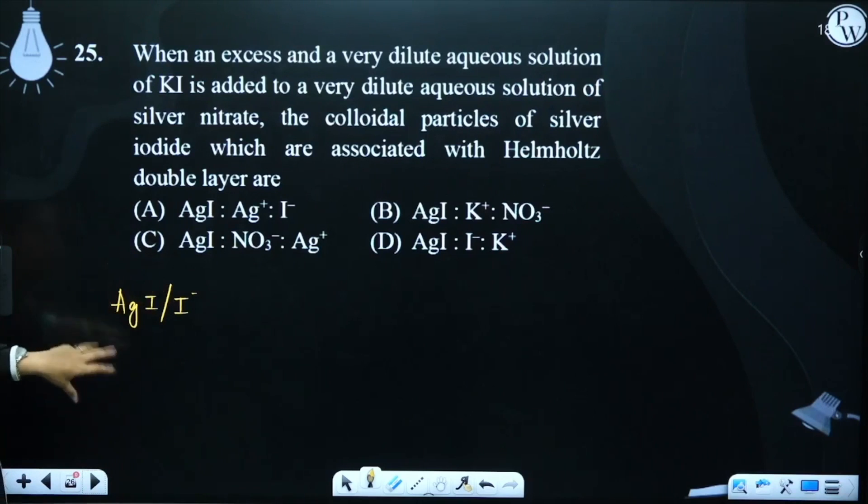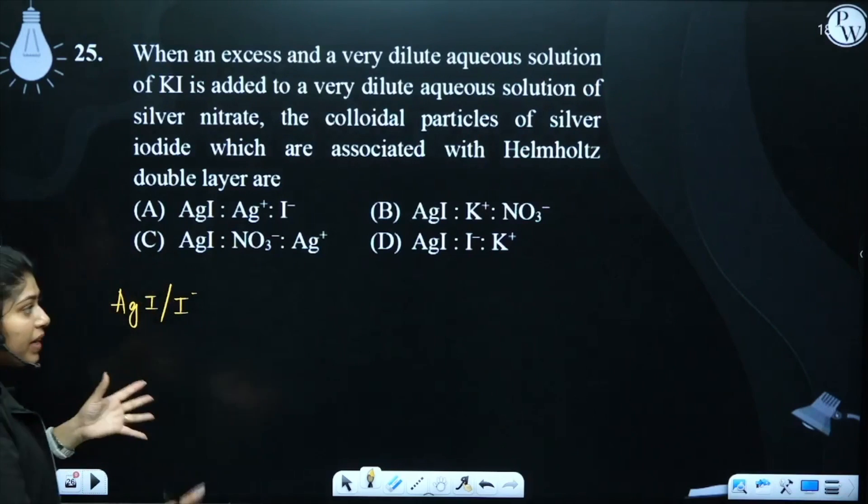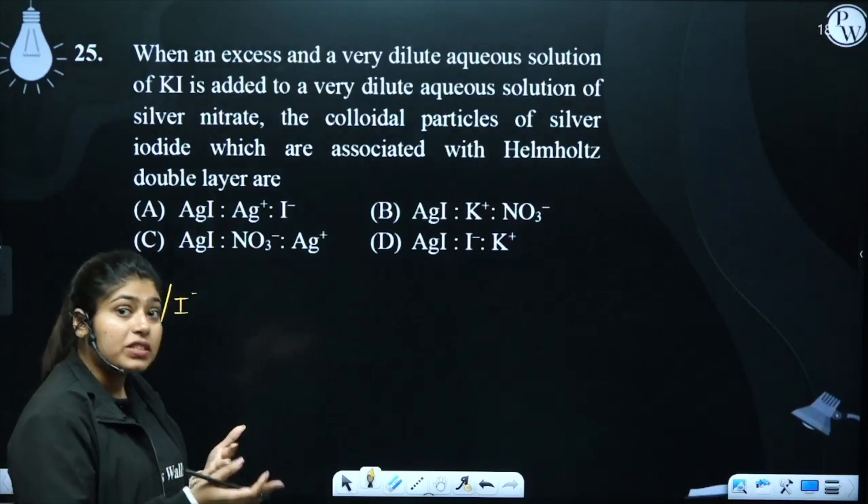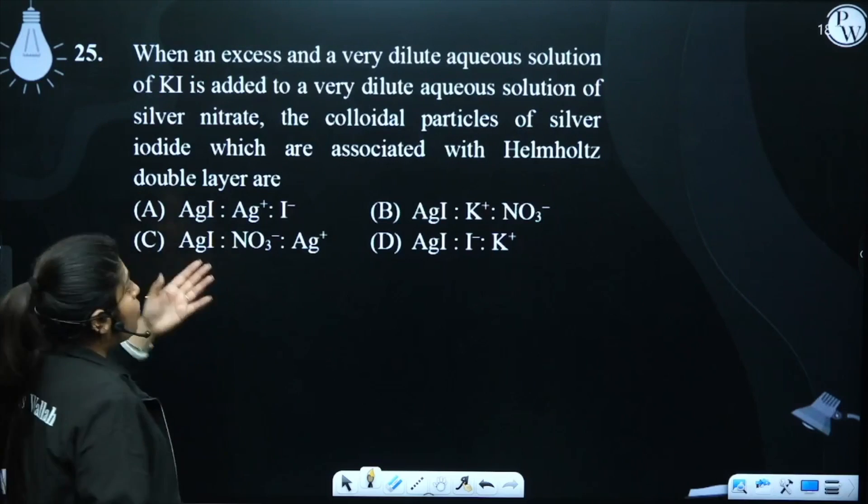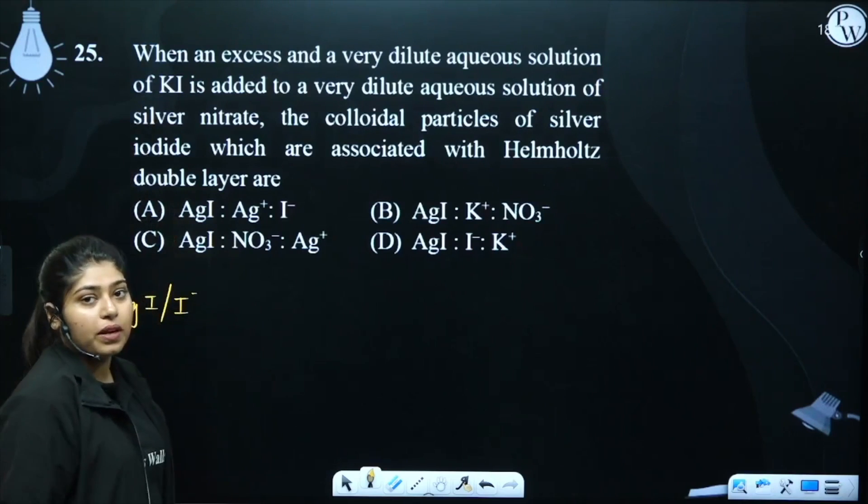Now, this layer of I minus is negatively charged. Who will attract the particles? Positive charged particles will attract them. So which is positively charged in the excess? Potassium.